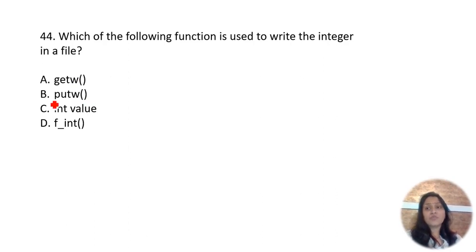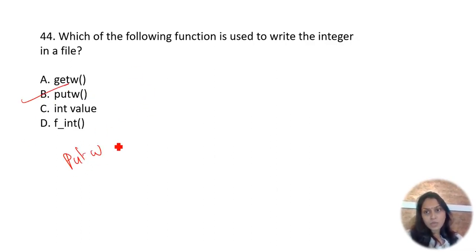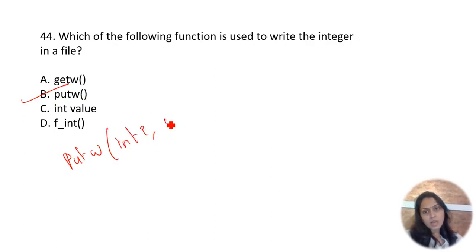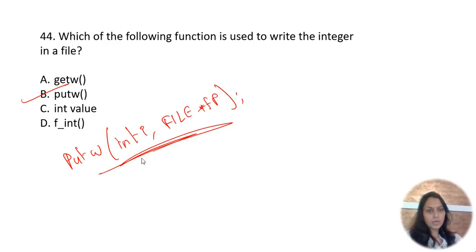Which function is used to write an integer in a file? The function used is putw. The syntax for putw is: putw(int i, file_pointer) — it is used to write integers in a file.